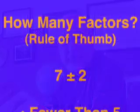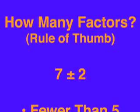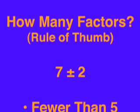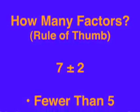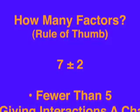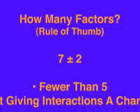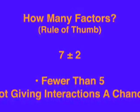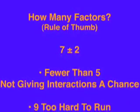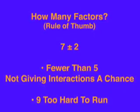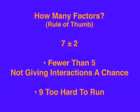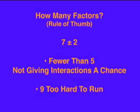Our last fractional factorial design looked at only three factors. Often we need to investigate complex systems that include many more factors. I have a rule of thumb: seven plus or minus two. If you have fewer than five factors, you don't give the system a chance to let the interactions surface, if they exist. If you try to run an experiment with more than nine factors, you will run into logistics problems getting all the settings exactly right. The biggest design I ever ran had twelve factors and took nearly a year to complete.